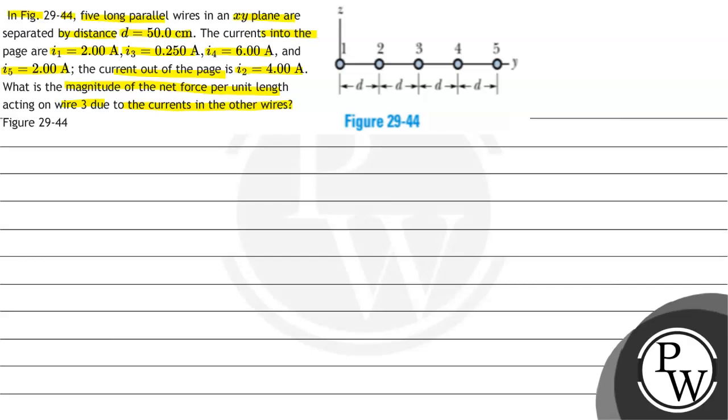The figure is given to us. Now let us first revise the key concept behind this question. The key concept is that whenever two long wires are along each other and they have current in the same direction, then they are attracted or they have an attractive force. We can write attraction here.